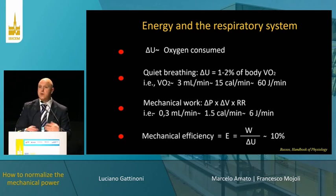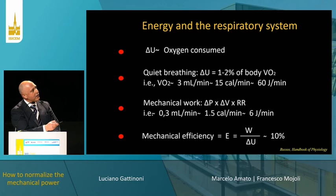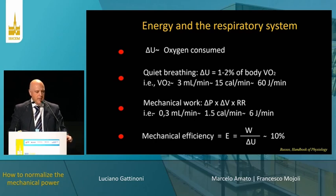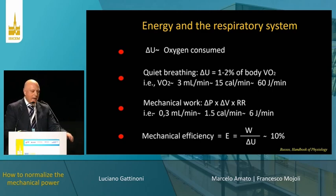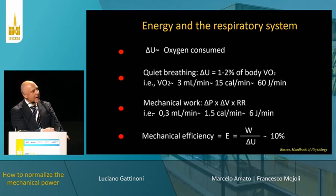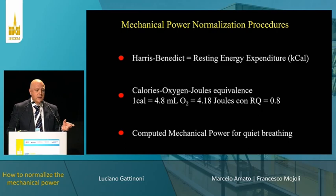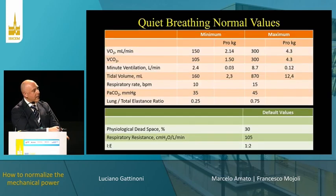So the question is: what is the energy required by the respiratory system to breathe? This is the change in internal energy, which is approximately similar to the oxygen consumed by the respiratory muscles. During quiet breathing, the amount of internal energy is about 1 to 2% of the body's oxygen consumption, which is about 60 joules per minute. From classical physiology of the 1960s, mechanical work was calculated at about 6 joules per minute, making the respiratory muscles about 10% efficient. We used calculations looking at resting energy expenditure and calorie-oxygen-joules equivalents to compute mechanical power for quiet breathing.